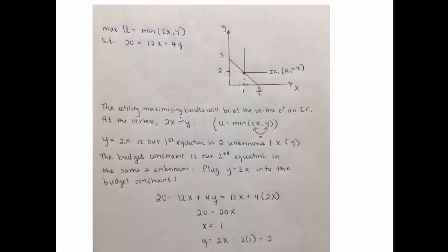Good news, in the case of perfect complements, we don't have to do a lot of math. We literally just have to set what's on one side of the comma in the min function equal to what's on the other side. And what we get from that is our first equation and two unknowns.